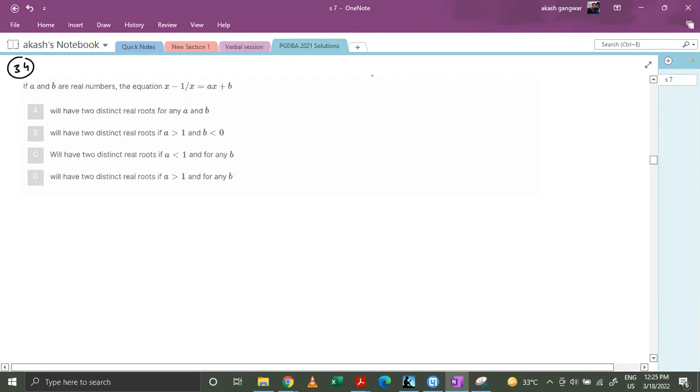Let's look at question number 34. If a and b are real numbers, the equation is x minus 1 by x equals ax plus b, and these are the options.